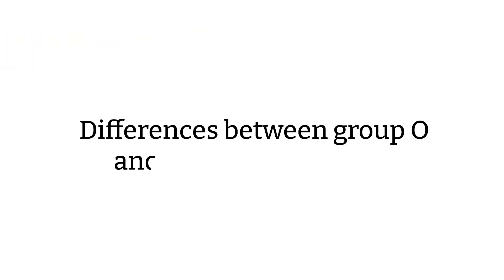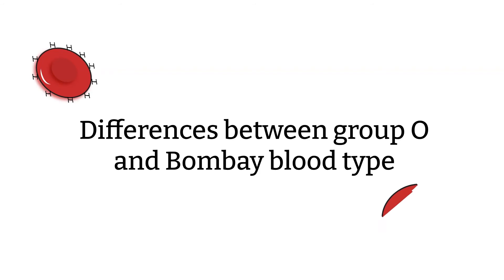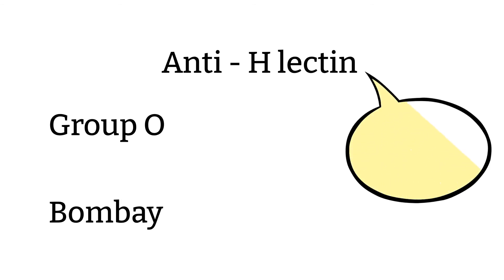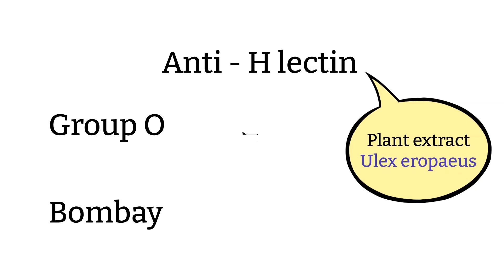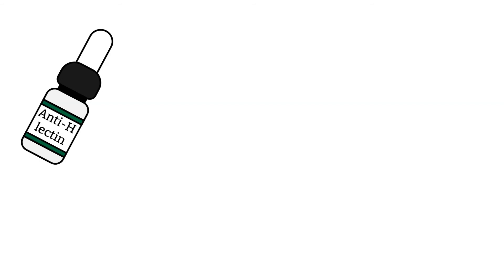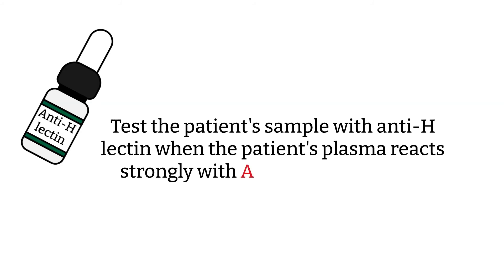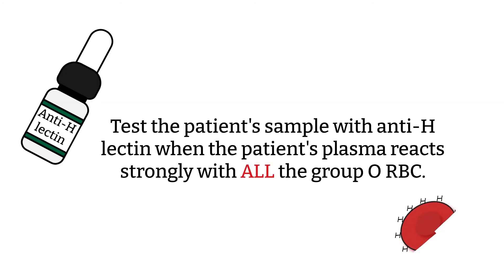How can we tell the difference between an individual with group O blood type and an individual with Bombay blood type when both react the same in blood typing? Even though patients with O and Bombay blood type react the same in forward and reverse typing, they do not react the same with Anti-H lectin. A person with group O blood type will agglutinate with Anti-H lectin, while a Bombay person does not. We know to perform the Anti-H lectin test when we perform an antibody screen, because Bombay patients show strong agglutination to all group O RBCs, since group O RBCs have the most H antigen expression on the surface.